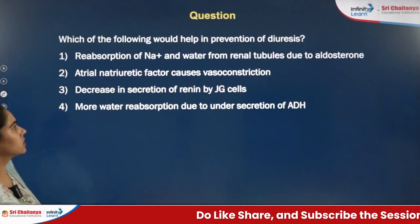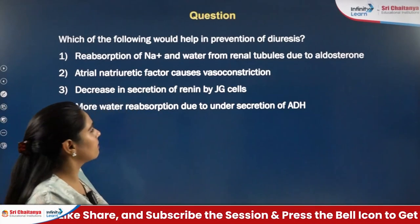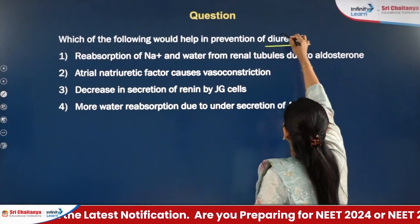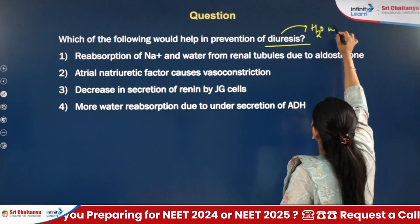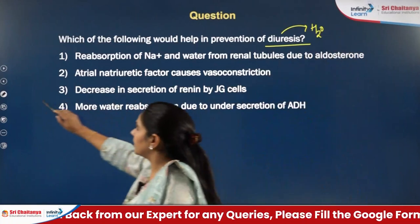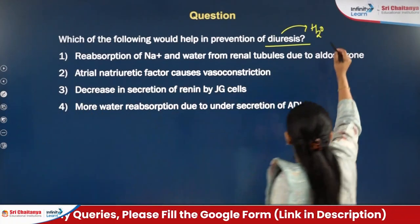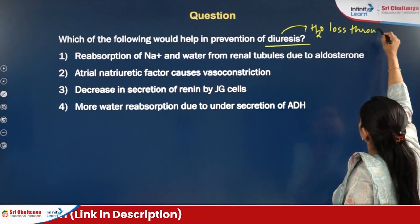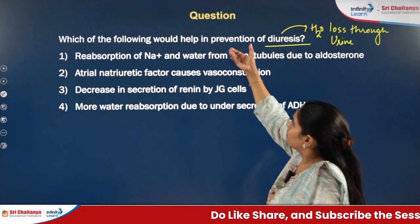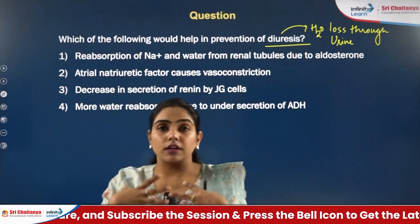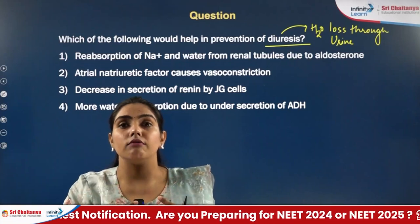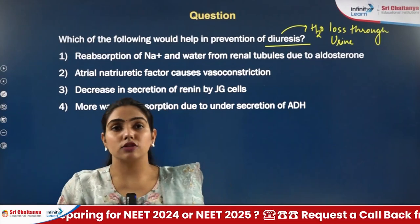The next question: which of the following would help in prevention of diuresis? Diuresis means water loss through the urine. We want to prevent diuresis because if a huge water loss occurs through urine, our body will feel dehydrated, which is not good for the body.